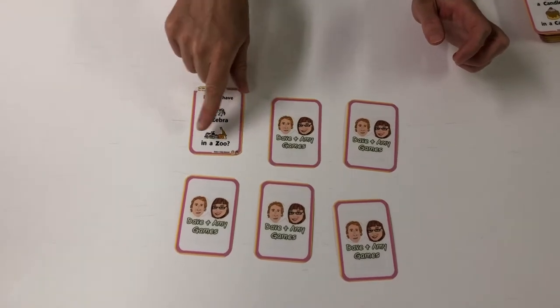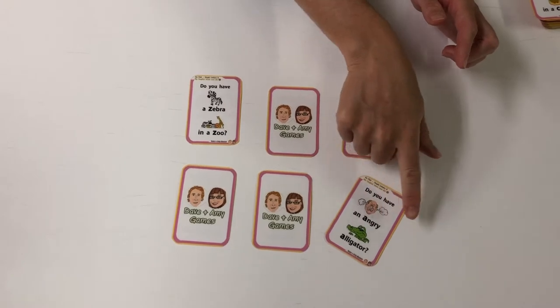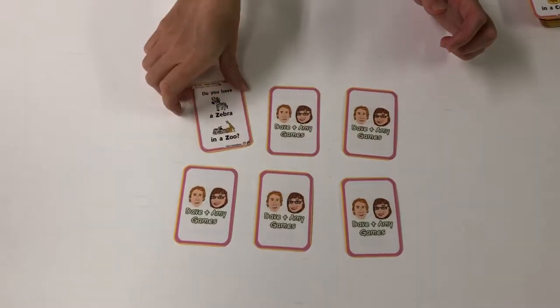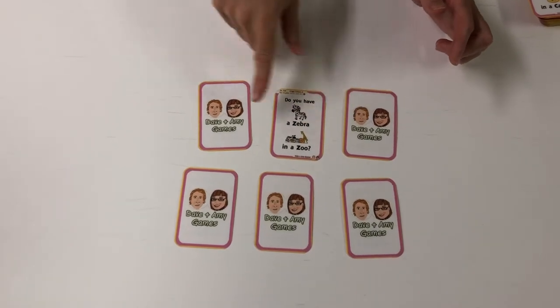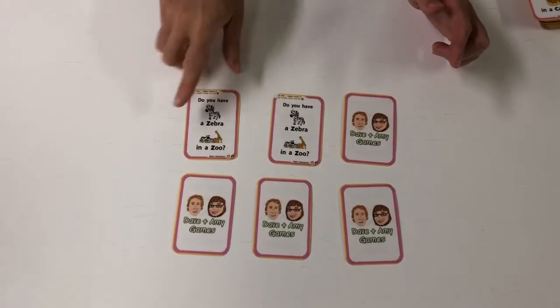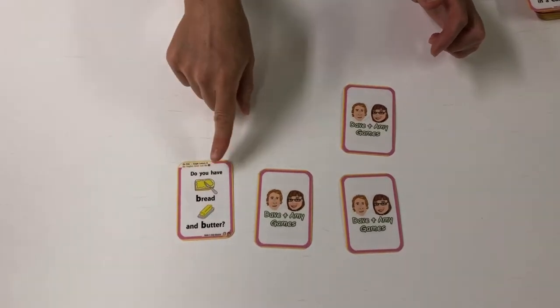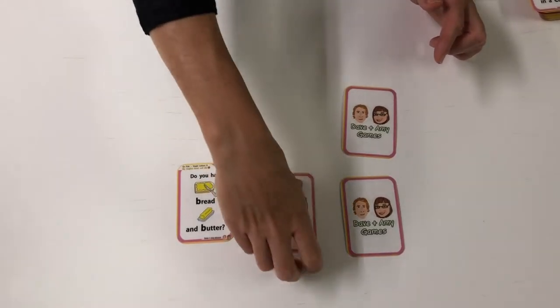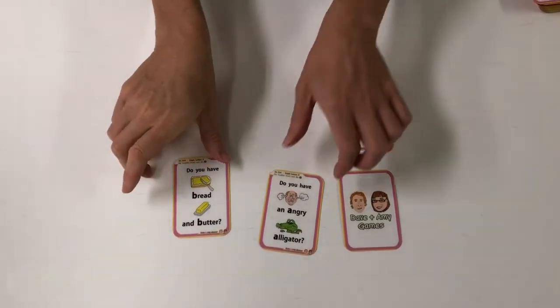Do you have a zebra in a zoo? Do you have an angry alligator? No. Do you have a zebra in a zoo? Yes. Do you have bread and butter? Do you have an angry alligator? No.